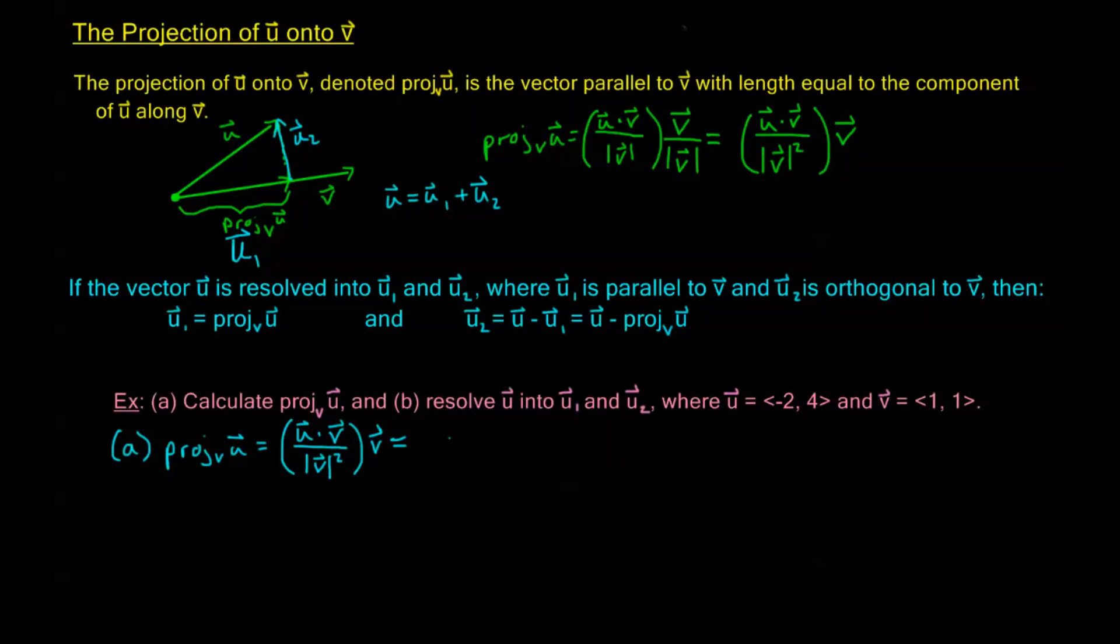u·v is -2 times 1 plus 4 times 1. This is all over the magnitude of v squared, which just means that instead of having a square root, I'm looking at 1² plus 1². The magnitude of v is the square root of this, but because we're looking at magnitude of v squared, the square root cancels out with that squared.